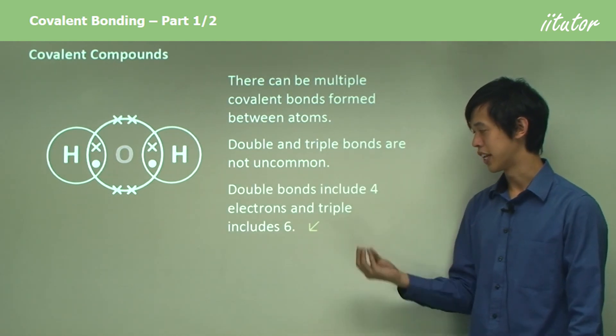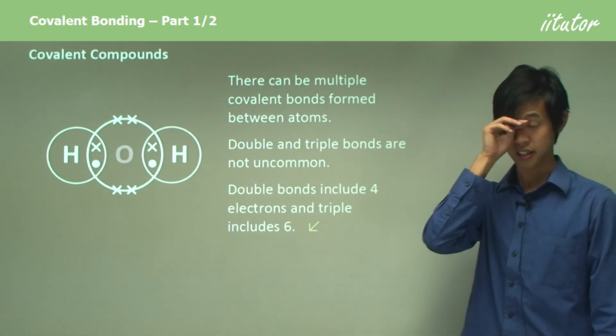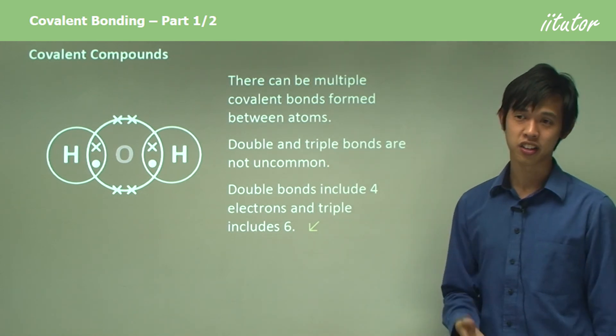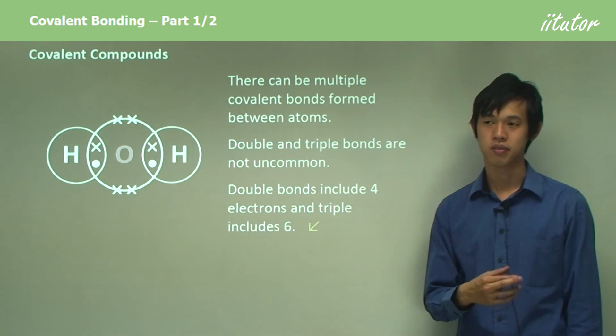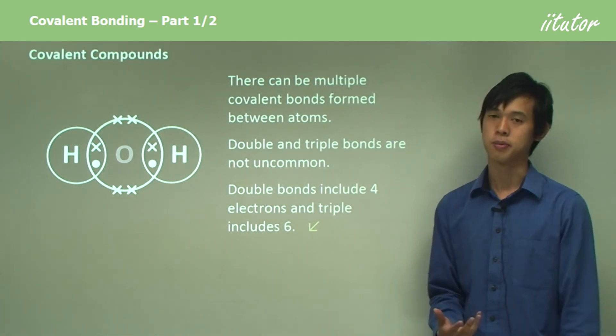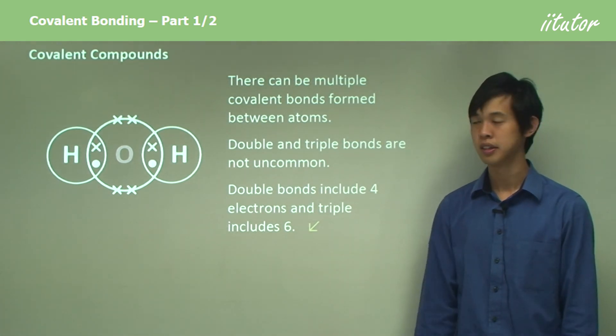Double bonds include four electrons and triple bonds include six. Triple bonds are a bit rarer than double bonds, but they do occur. Nitrogen, for instance, has a triple bond. Ethine also has a triple bond. So they're sharing six electrons.